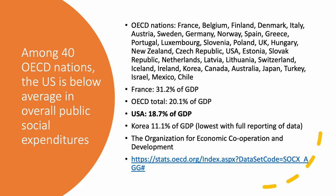Comparing ourselves to other developed nations: the OECD — the Organization for Economic Cooperation and Development — consists of about 40 well-developed, strong economies around the world. France spends 31% of their GDP on social expenditures. The average for all 40 nations is 20% of GDP. What do we spend? 18.7%. We are the wealthiest nation in the world, and we spend less than the average. Nations that are less wealthy than we are spend a higher percentage of their GDP on social expenditures.